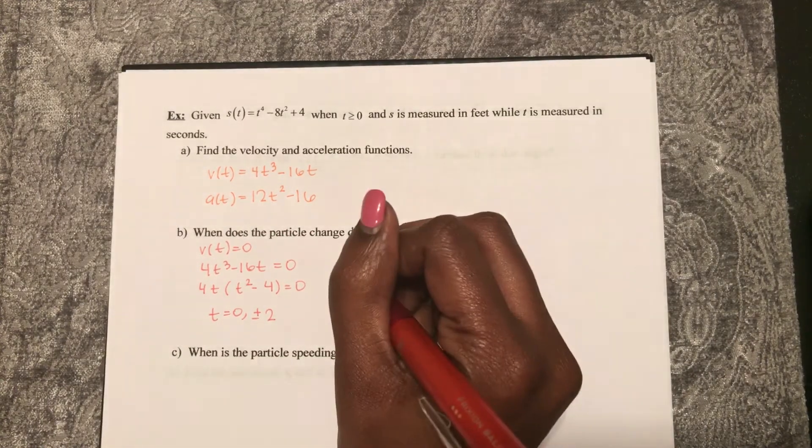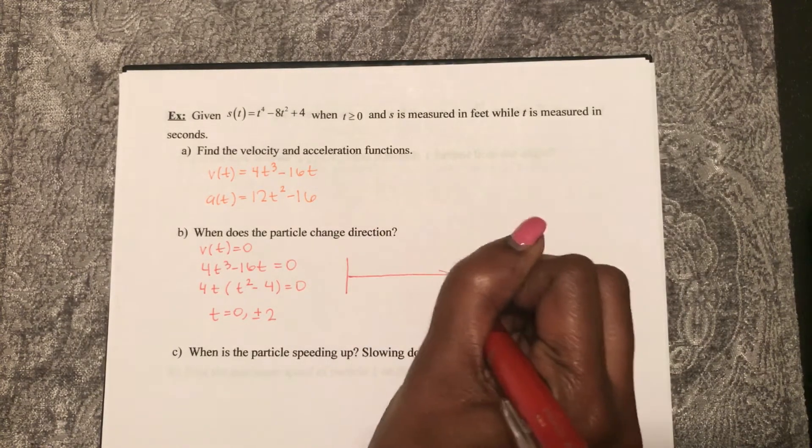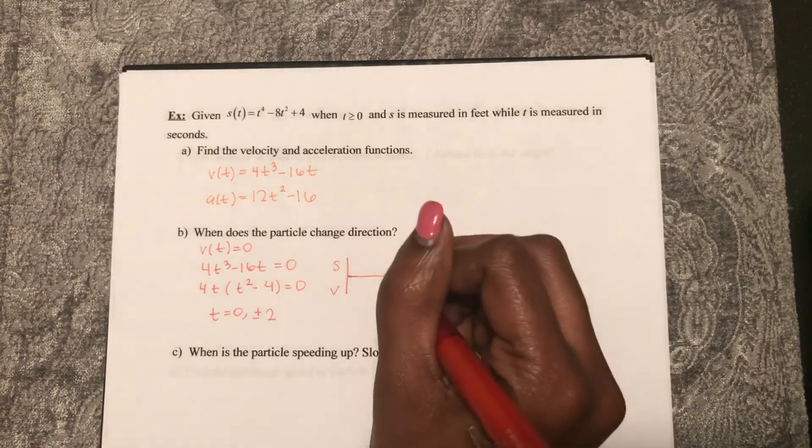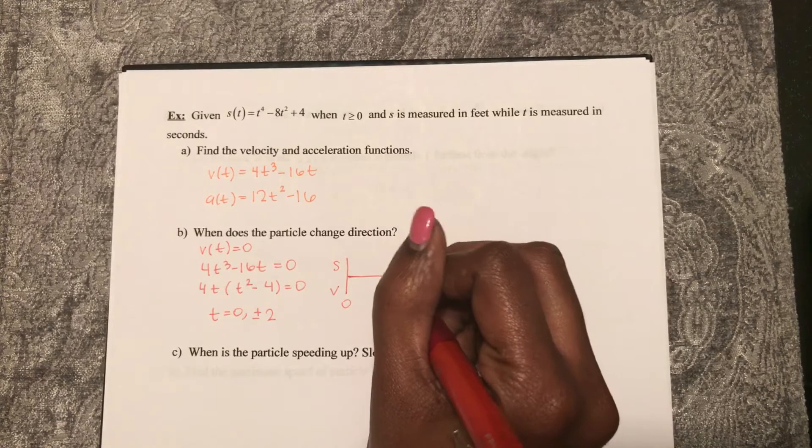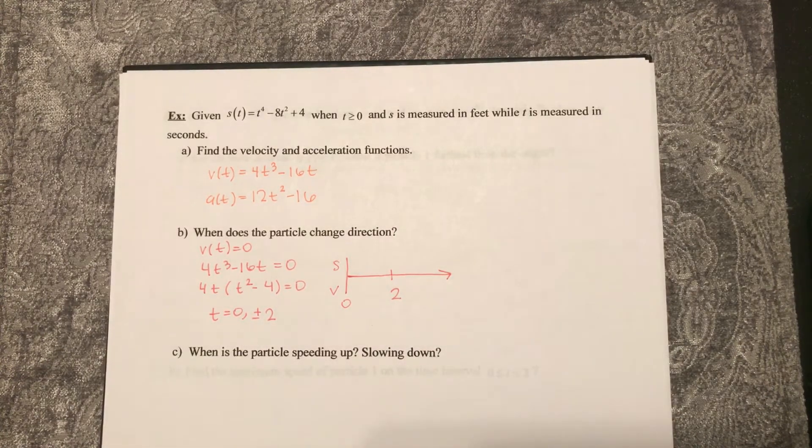So if I want to compare my position to its velocity, starting at time equals 0 and 2. Negative 2 doesn't make sense for time.